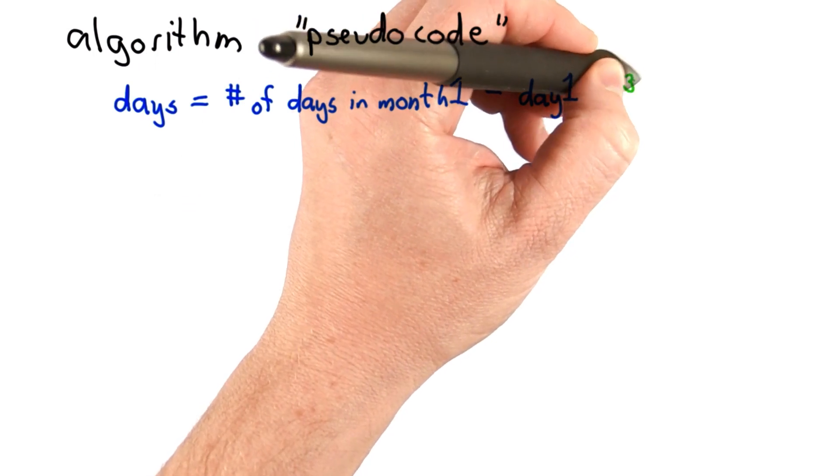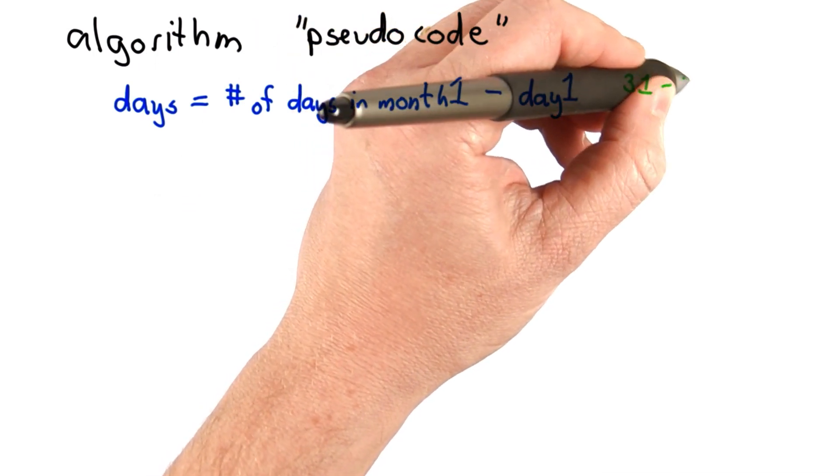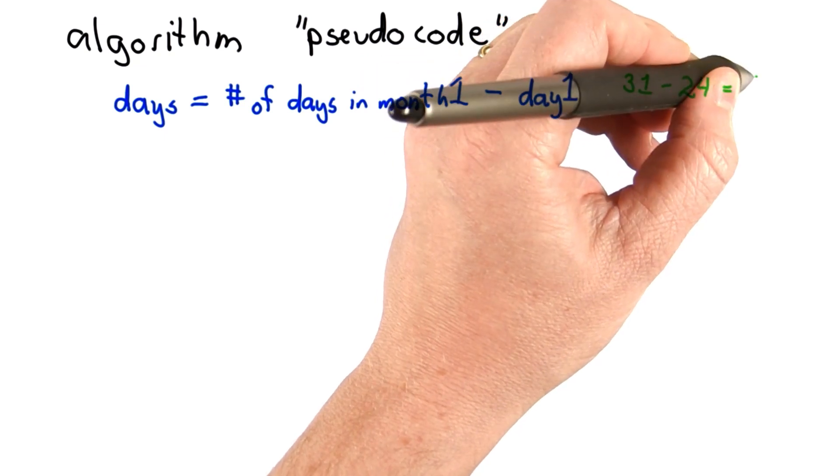So for the example, that was 31 for the number of days in January minus 24, which is 7.